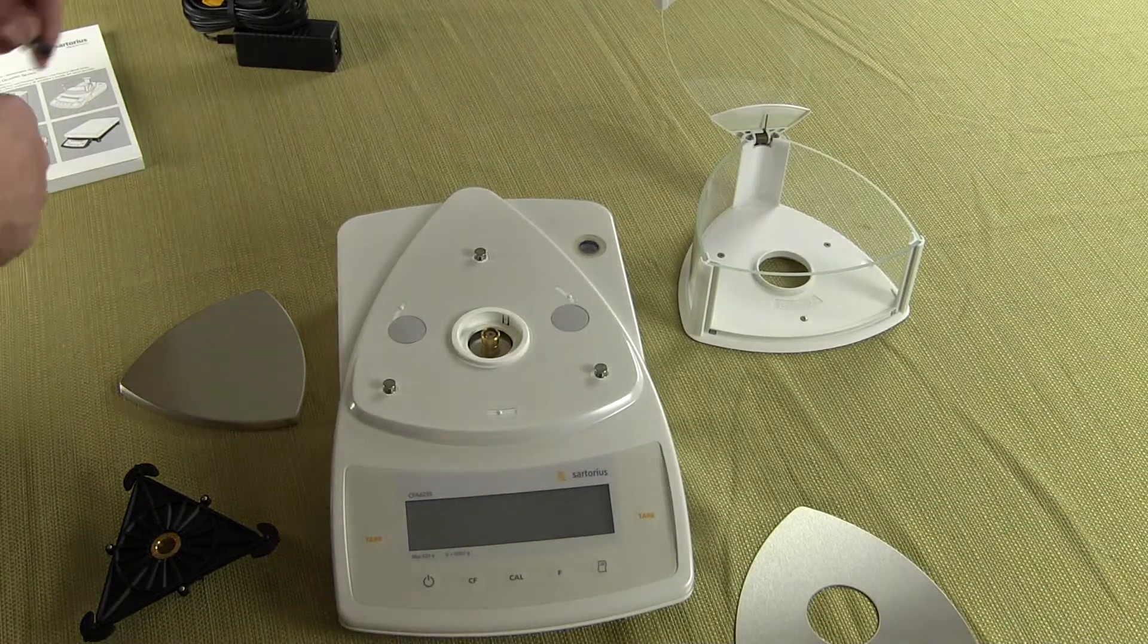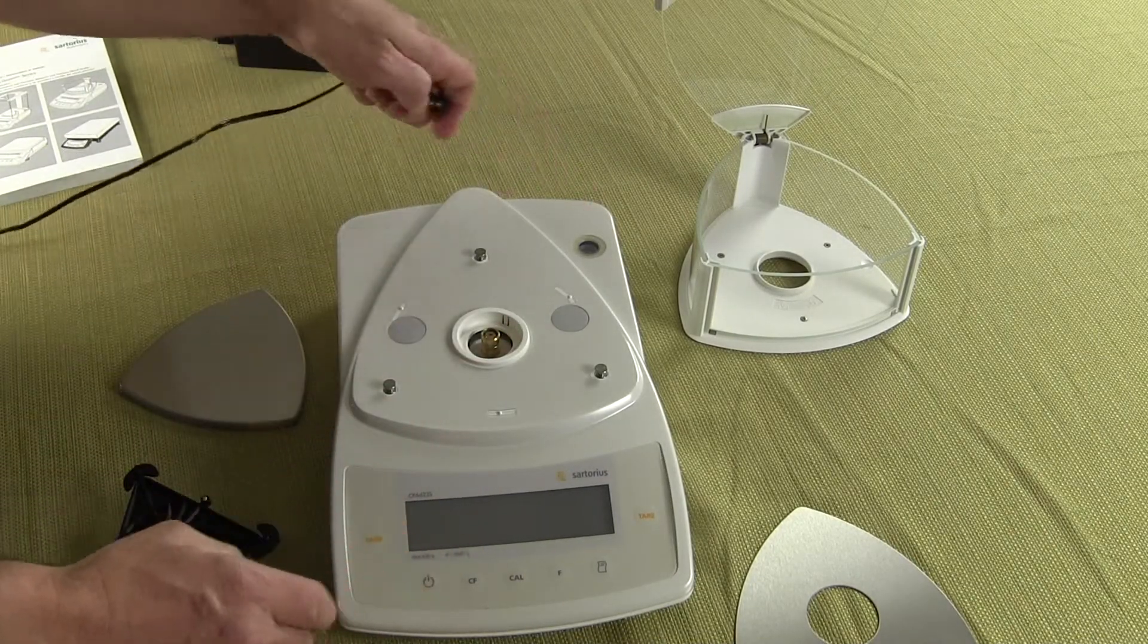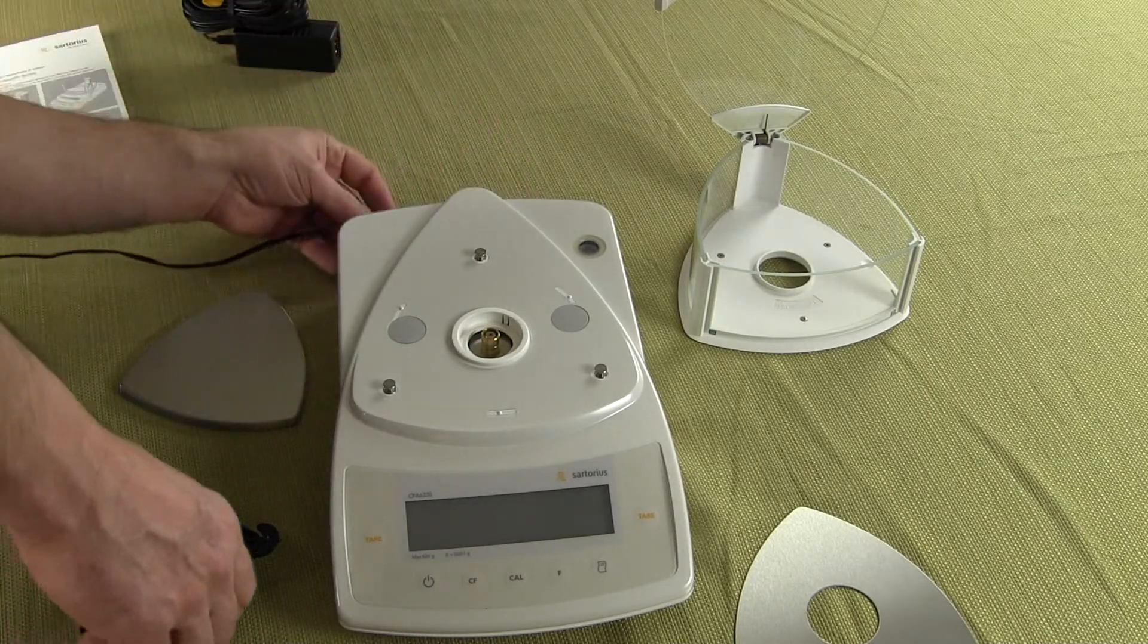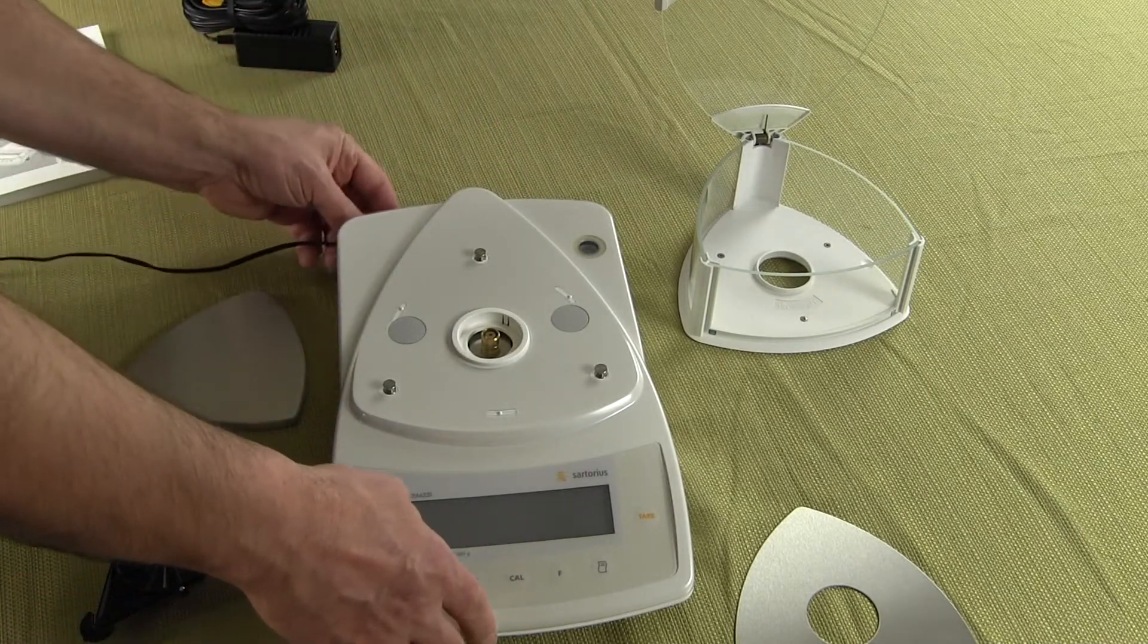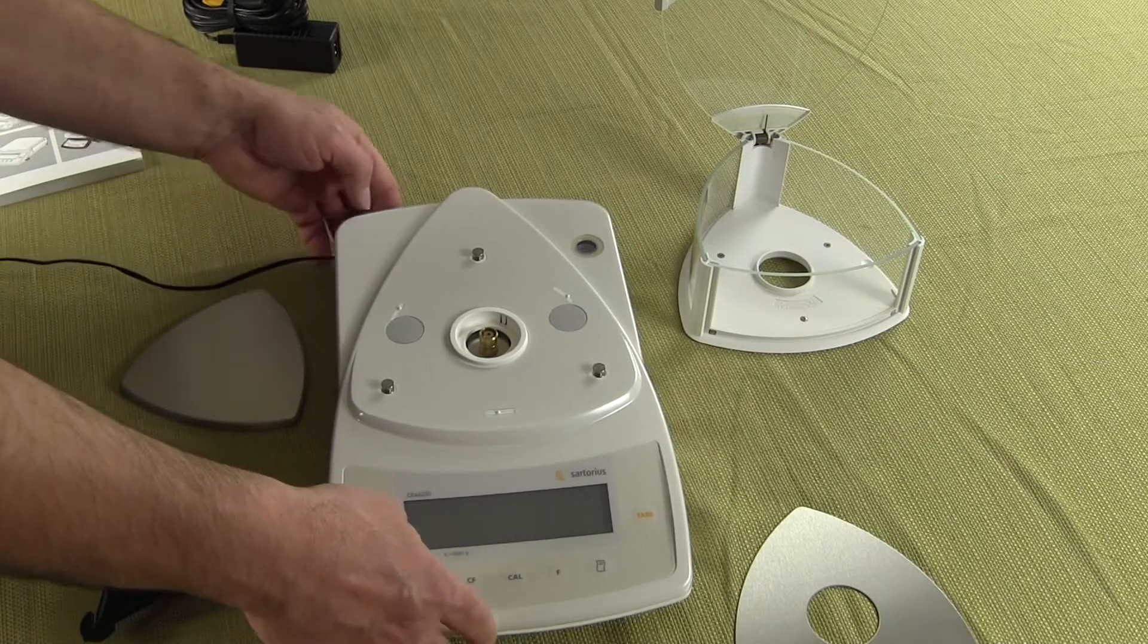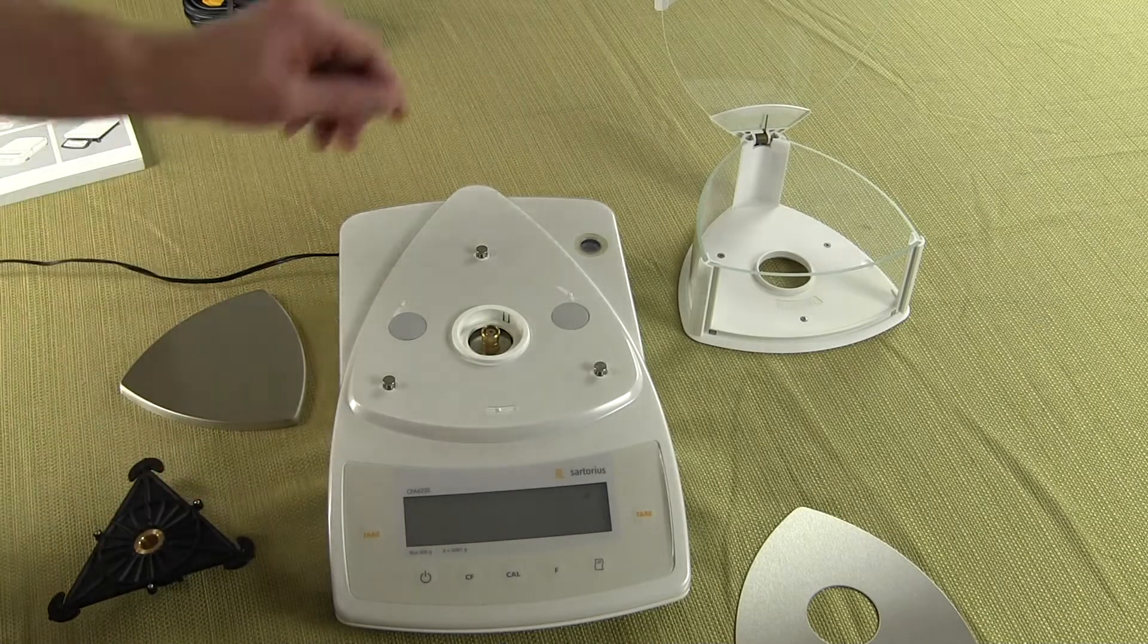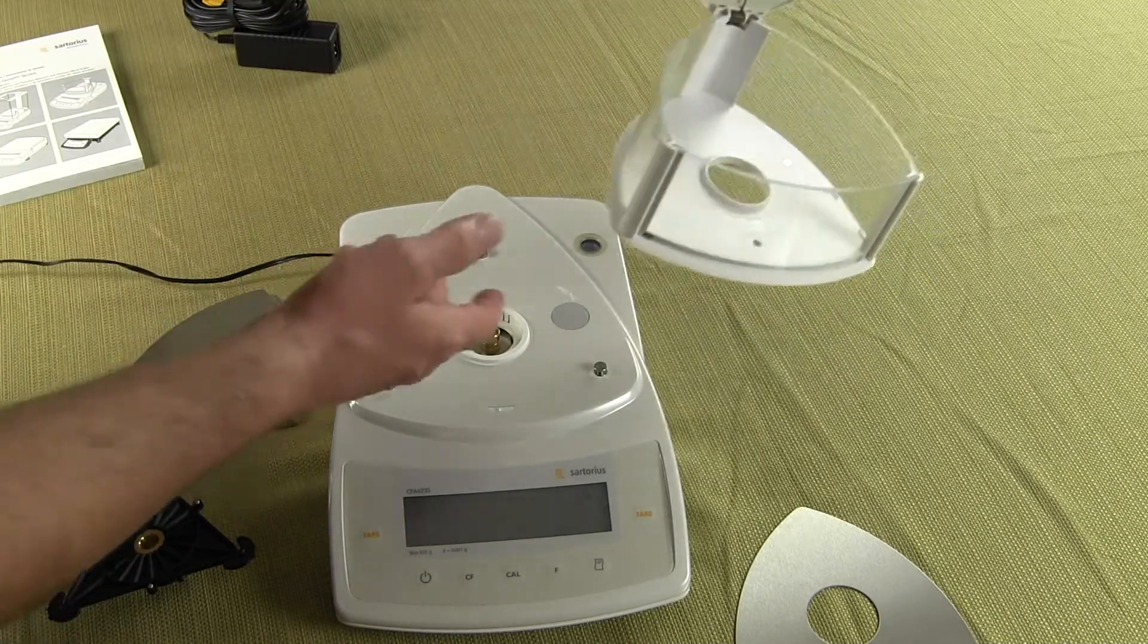So the first thing you want to do is level the balance and I've already leveled the balance so we're all set there. And we want to power up the unit. Plug in the AC adapter to the rear of the balance. And the first thing we're going to do is our draft shield.